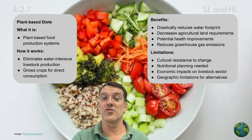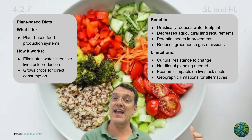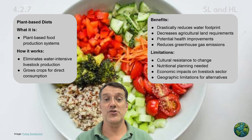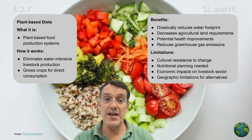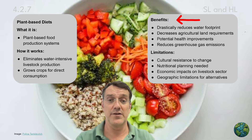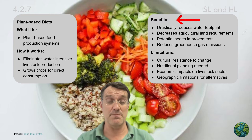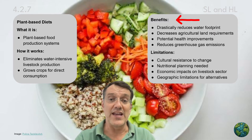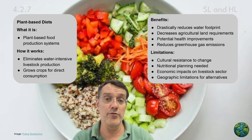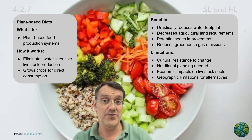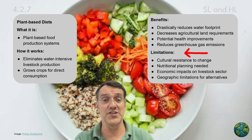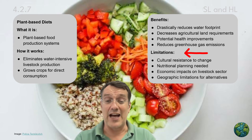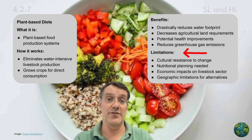Plant-based diets offer a systematic approach to water conservation by shifting food production away from water-intensive animal agriculture. This strategy eliminates the water needed for livestock production and grows crops directly for human consumption. Benefits include drastically reduced water footprints — producing a kilogram of beef requires about 15,000 liters of water compared to 1,800 liters for a kilogram of wheat — as well as decreased agricultural land requirements, potential human health improvements, and reduced greenhouse gas emissions. Limitations include cultural resistance to dietary changes, challenges around nutritional planning, economic impacts on livestock sectors, and geographic limitations for some alternatives.